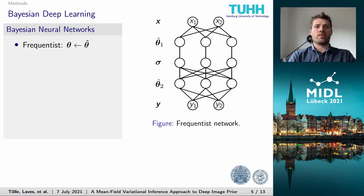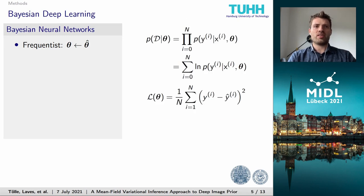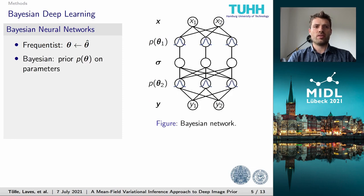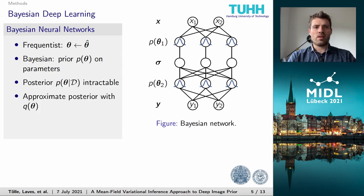Coming to the Bayesian approach to deep learning: the Bayesian approach differs from the frequentist one in the assumption that we do not only have one optimal solution. The frequentist solution is obtained by assuming independently and Gaussian distributed data, which results in the mean squared error as loss function in regression. The Bayesian approach, on the other hand, models each weight with a probability distribution by imposing a prior. However, for making predictions with a Bayesian model, we must marginalize out all possible distributions by integrating over the posterior, which is intractable.